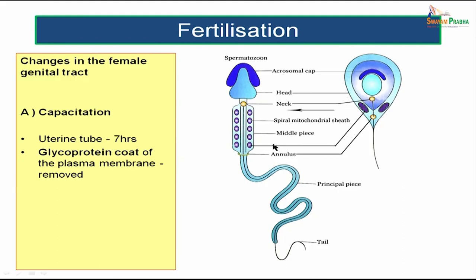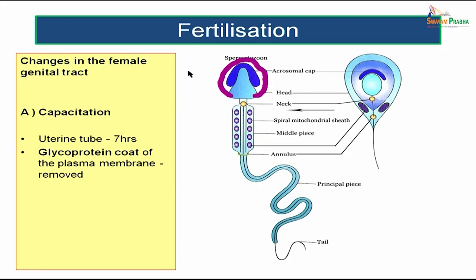What are the changes happening for the sperm in the female genital tract? There are mainly two changes. The first is capacitation, which actually happens in the uterine tube and takes about seven hours. During those seven hours, the glycoprotein coat of the plasma membrane over the sperm is removed during capacitation.